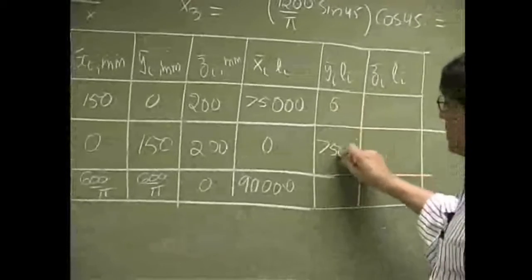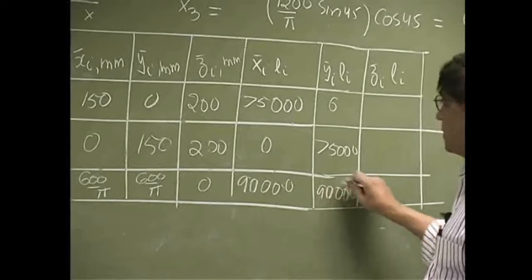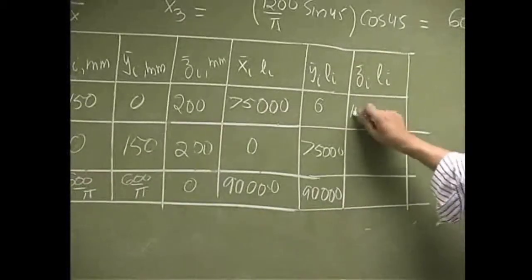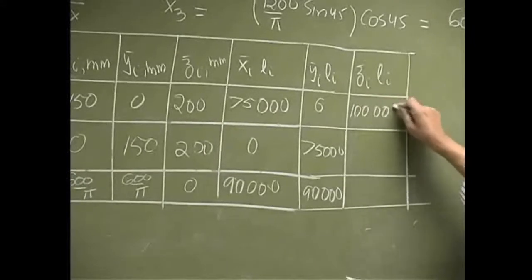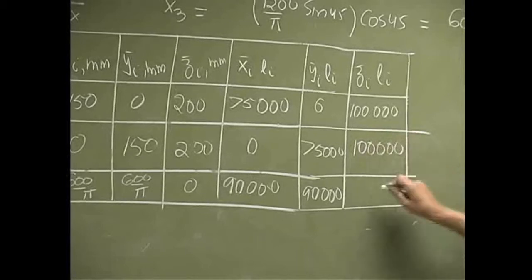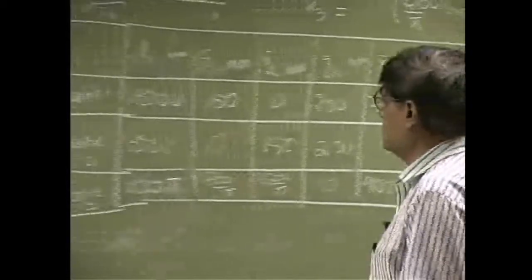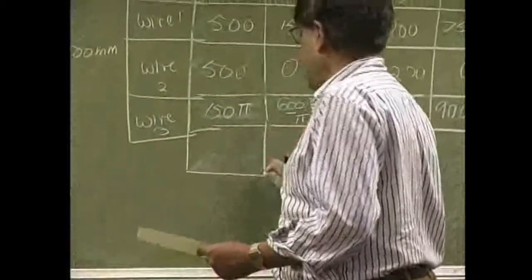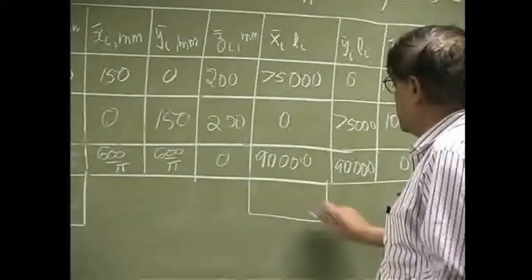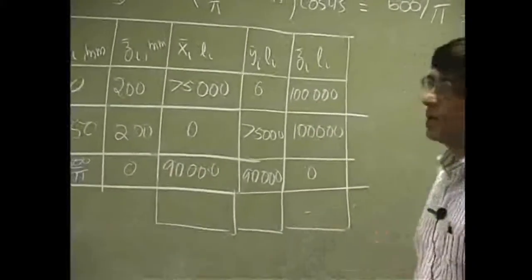This times this becomes 100,000, that's the first one. The second one is also 100,000, and the last one is zero. Let me do additions. We add everything in this column, we add everything in this column, same thing here, we add everything in this column as well as this column.